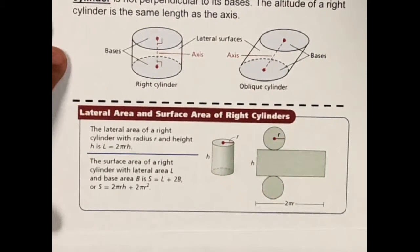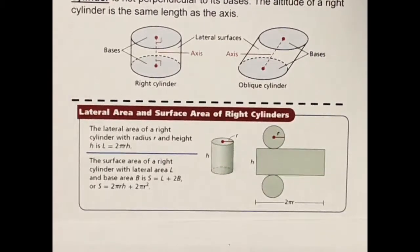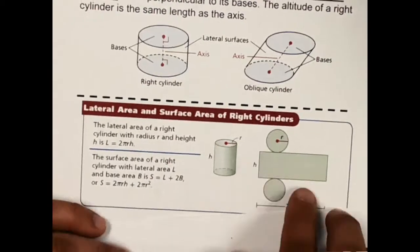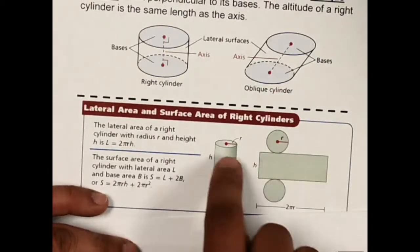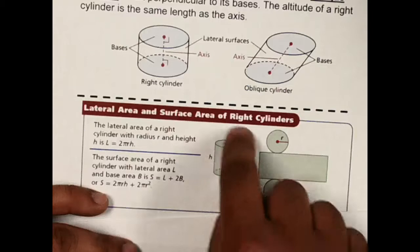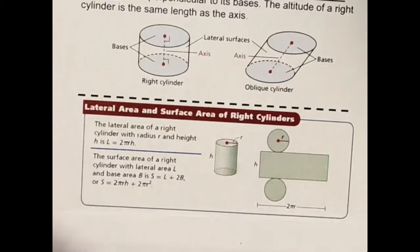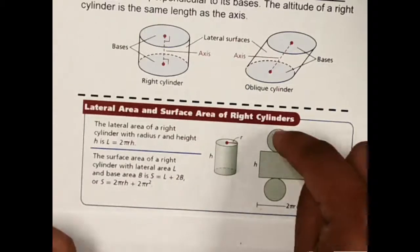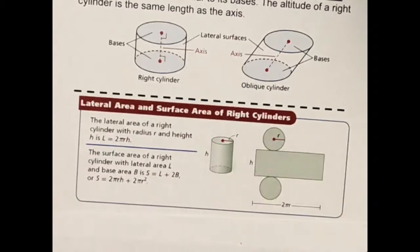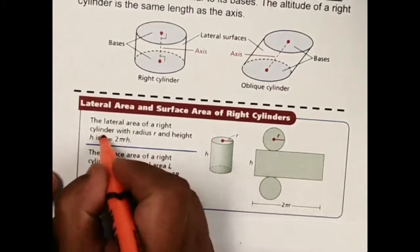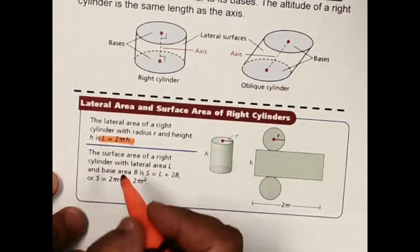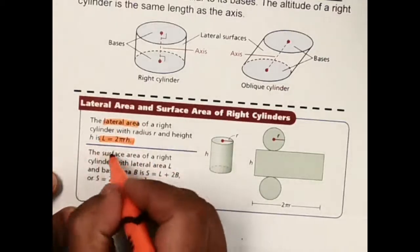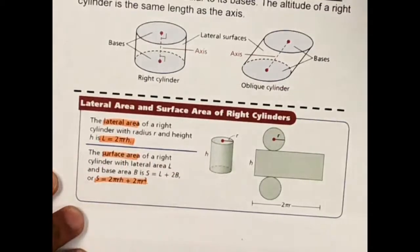Now let's look at the formulas. If I take the cylinder and flatten it out, I get a rectangle in the middle — that's the label, like a food can — and two circular bases. My lateral surface area does not include the bases, so that's 2πrH. The total surface area is 2πrH plus 2πr squared.